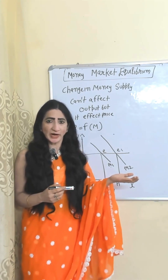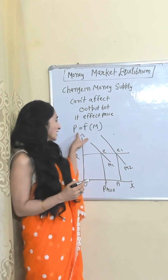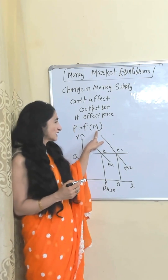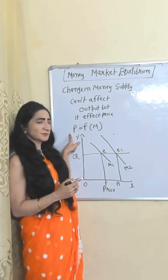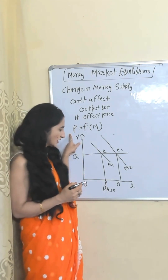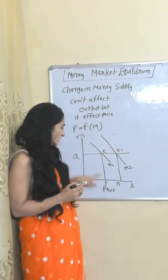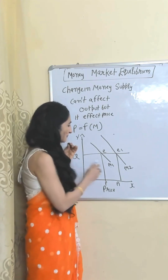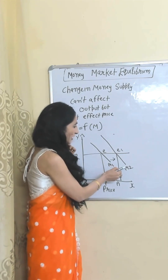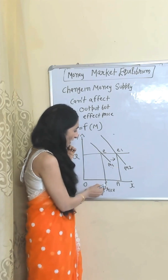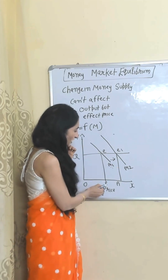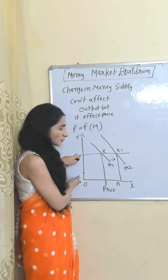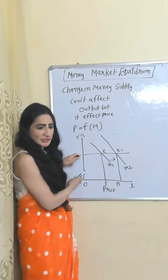In money market equilibrium, a change in money supply does not affect output but does affect prices. Price is a function of money supply — as money supply increases, prices also increase. When money supply increases from M1 to M2, price increases from P1 to P2, but output remains constant.